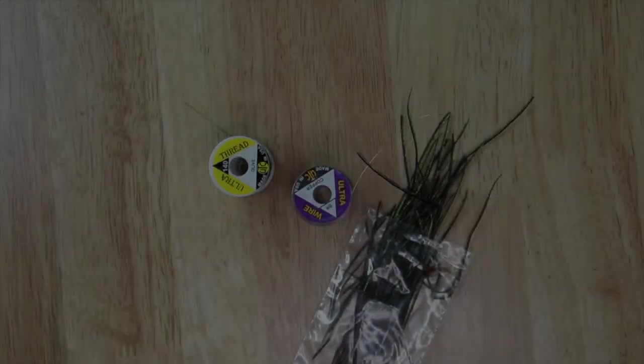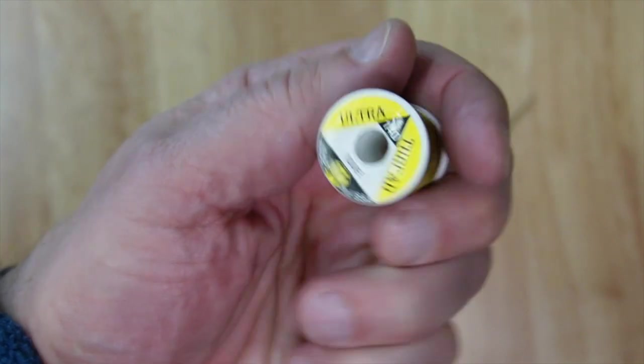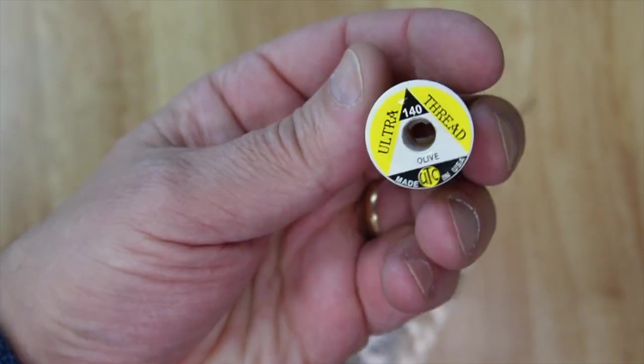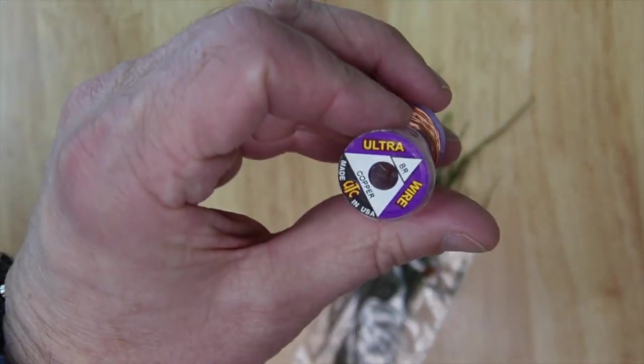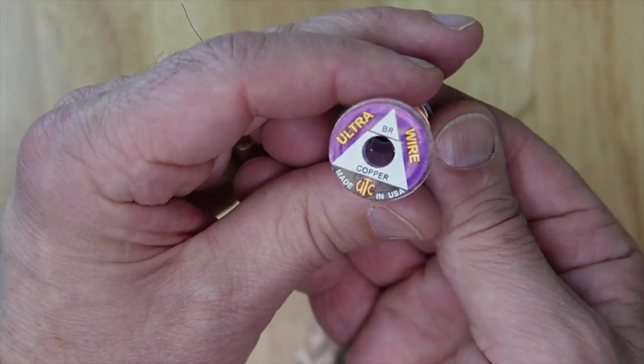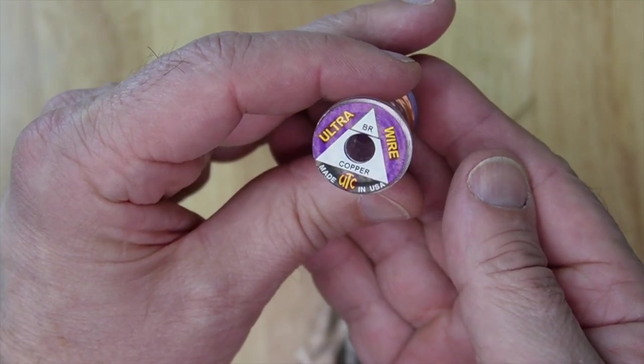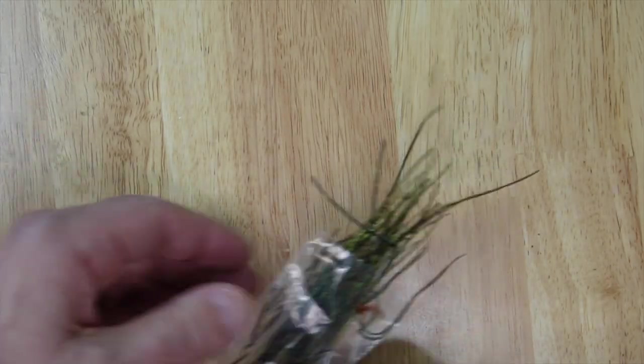Hi, today we're going to be tying the Brassy. This quick tie only uses three materials. So grab your 140 olive thread, your copper wire, and then grab your peacock hurl. If you need to pause to get these, go ahead and do that.